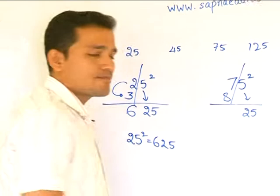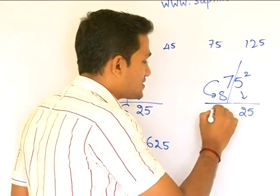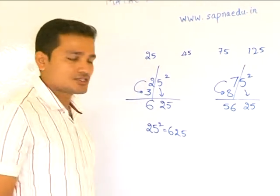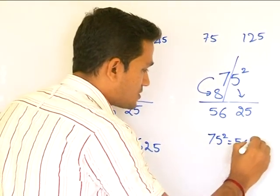So, the next higher digit would be 8. So, multiply these two digits. 7 into 8 is 56. So, 75 square is 5625.